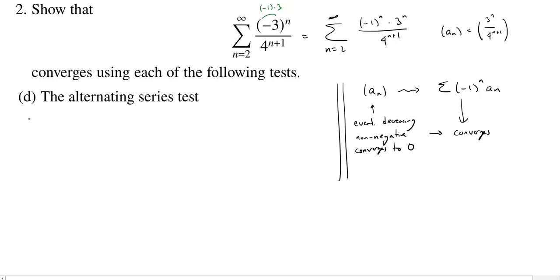So if our sequence is a n, and that's 3 to the n over 4 to the n plus 1, let's ask, is it eventually decreasing? Well, actually, it's decreasing from the start. Remember, each term in here, right? So what is a n plus 1? a n plus 1 would be 3 to the n plus 1 over 4 to the n plus 2, which is just 3 fourths of 3 to the n over 4 to the n plus 1.